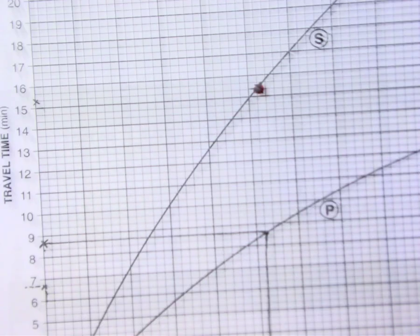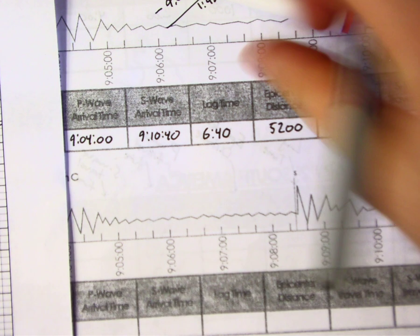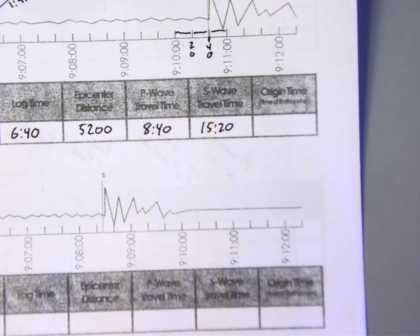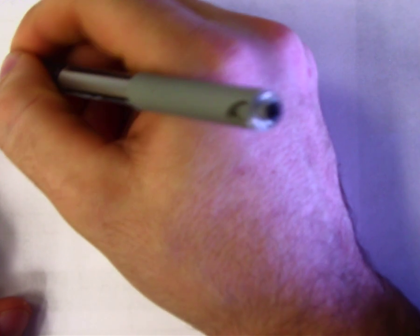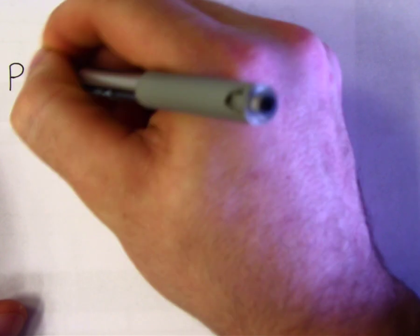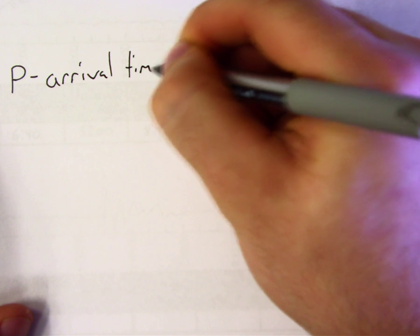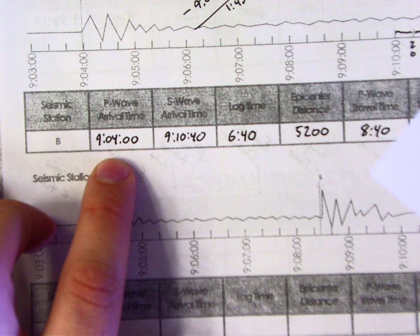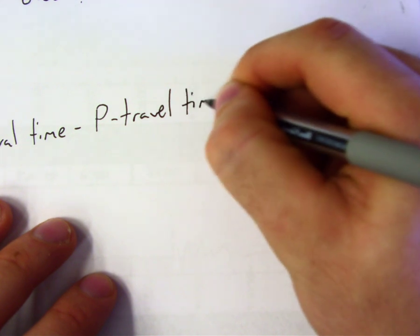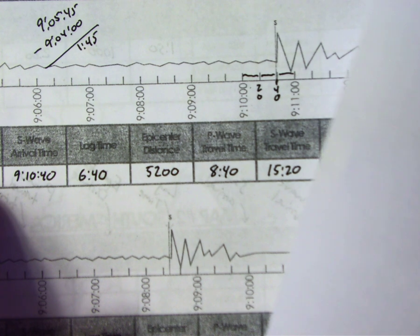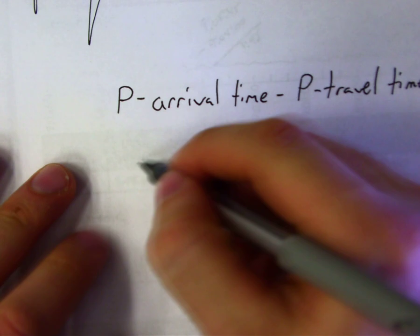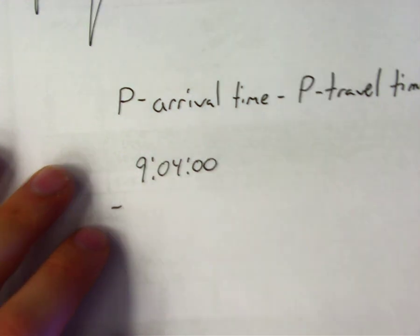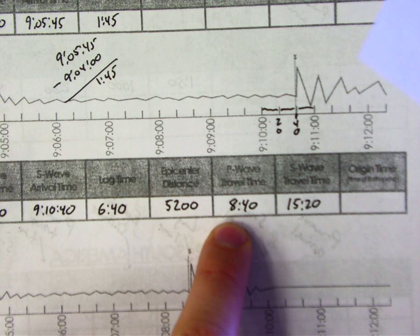The only thing left is origin time. The formula is: P wave arrival time minus P wave travel time equals origin time. You can also use the S wave equivalents. Our P wave arrival time was 9:04:00 and our P wave travel time was 8 minutes and 40 seconds. So you write 9:04:00 minus 8:40.